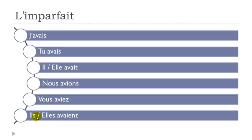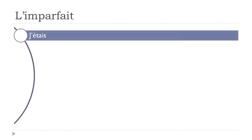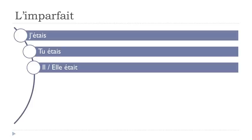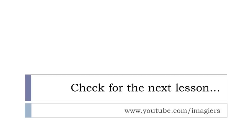For 'être': j'étais, tu étais, il était, elle était, nous étions, vous étiez, ils étaient, elles étaient. Note the accent aigu on 'é'. Not difficult to pronounce: j'étais, tu étais, il était, nous étions — with a liaison — vous étiez, ils étaient, elles étaient — with liaisons.